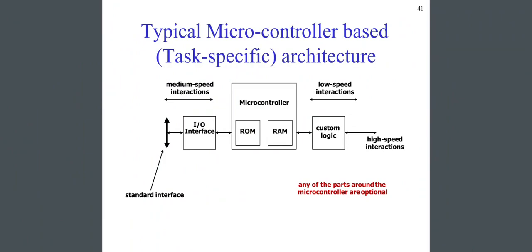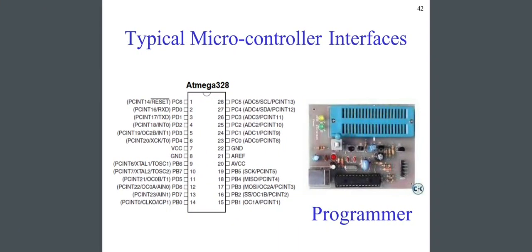This is a typical microcontroller-based task-specific architecture where any of the ports around the microcontroller are optional. In the figure, medium-speed interactions are on the left, low-speed interactions are on the right, and in the middle is the microcontroller where ROM and RAM are situated, connected with an input/output interface and custom logic for high-speed interactions. This shows typical microcontroller interfaces for an ATmega328 programmer, with pins 1 to 28 labeled.